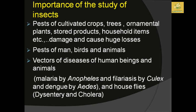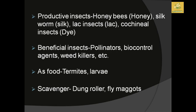Insects are mainly known as pests of cultivated crops, ornamental plants, stored food products, and household items, causing damage and huge loss for humans. They are also pests for man, boats, and animals. They are vectors of diseases of human beings and animals — for example, malaria by Anopheles mosquito, filariasis by Culex mosquito, dengue by Aedes mosquitoes, and house flies causing dysentery and cholera in human beings.